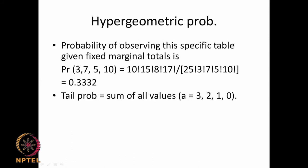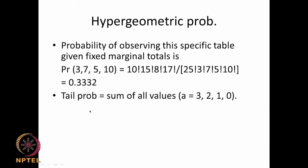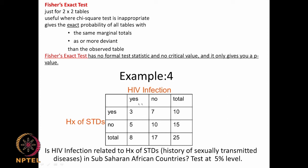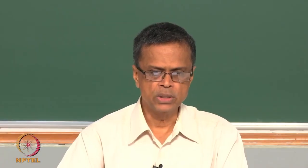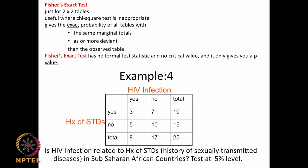The probability of table (3,7,5,10) is 0.3332; for (2,8,6,9) it is 0.208; for (1,9,7,8) it is 0.0595; for (0,10,8,7) it is 0.0059. Fisher's exact test is used where there is no test statistic and we cannot use chi-square, but it gives a probability value. Hypergeometric is useful in situations where capital N is known and small n is comparable to capital N.